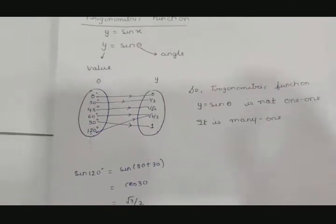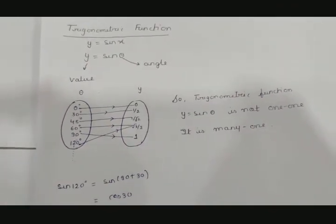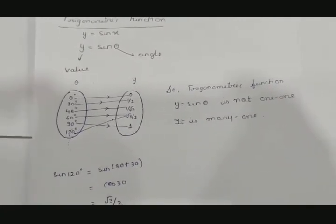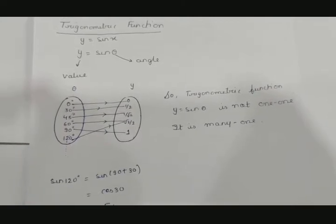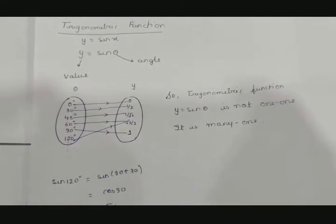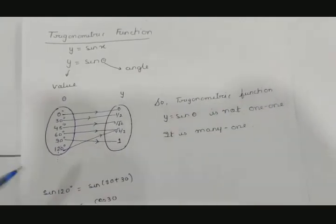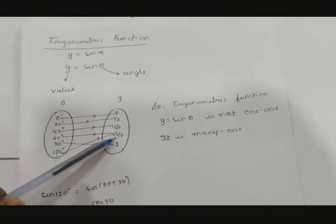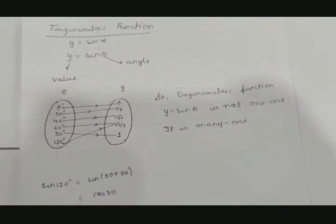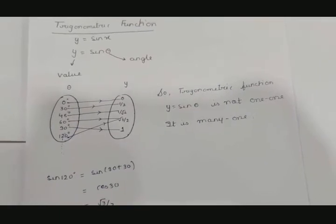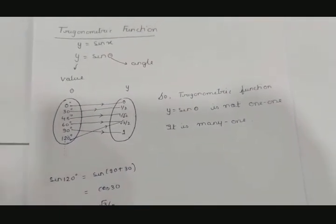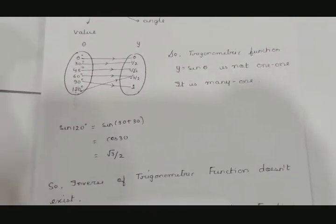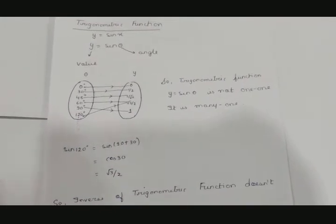Since the trigonometric function is many-one, its inverse does not exist, because we said inverse exists if and only if the function is one-one and onto. Here it is not even one-one, because sin 60° = √3/2 and sin 120° = √3/2 — the function is many-one. So the inverse of trigonometric function does not exist. Then how will we study this chapter on inverse trigonometric functions?